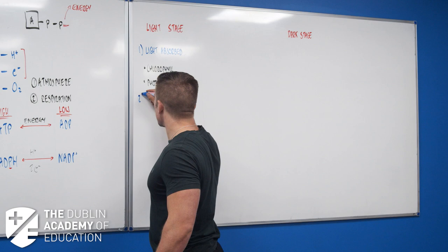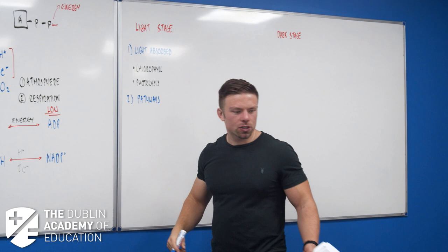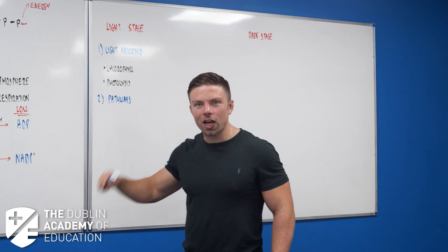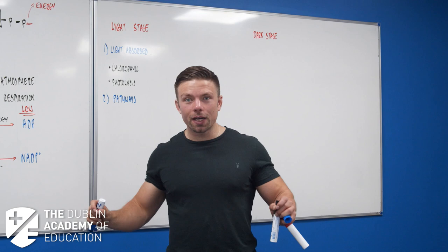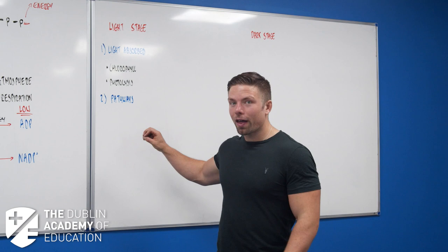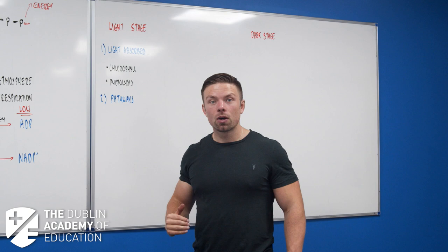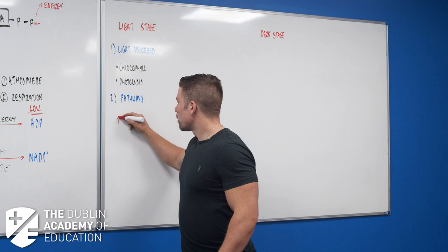Now we're into the part that a lot of people don't like - the pathways. But think about this: if this is the last piece of study and you don't like one part of it, you can still do the rest. You can definitely guess a couple of things with these pathways. There are two pathways: pathway one and pathway two.